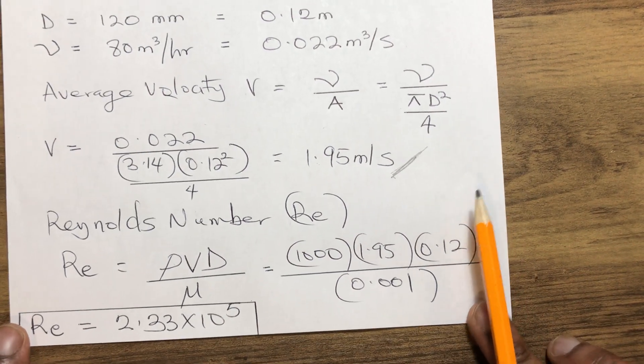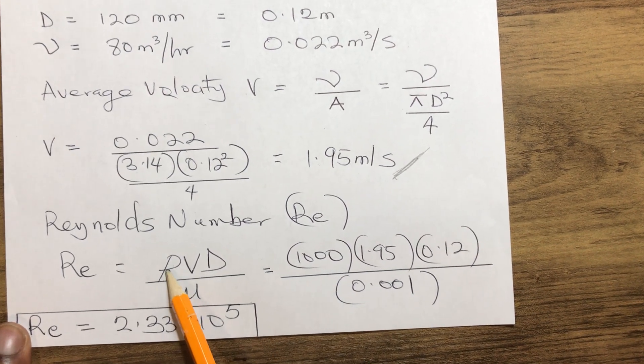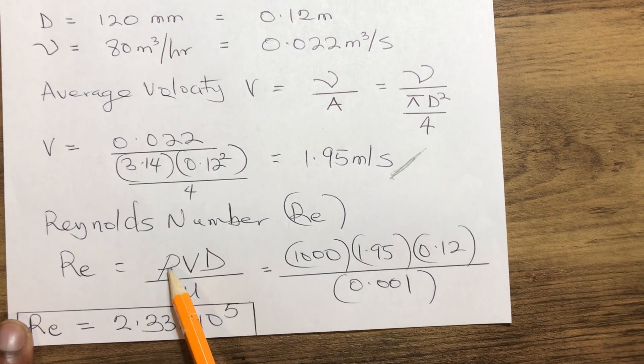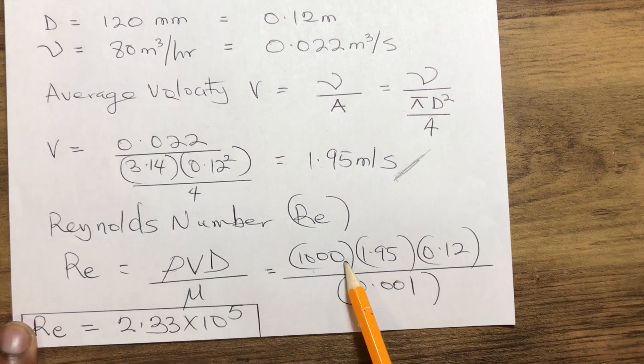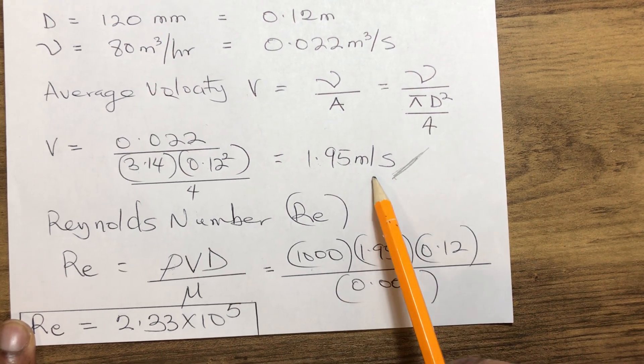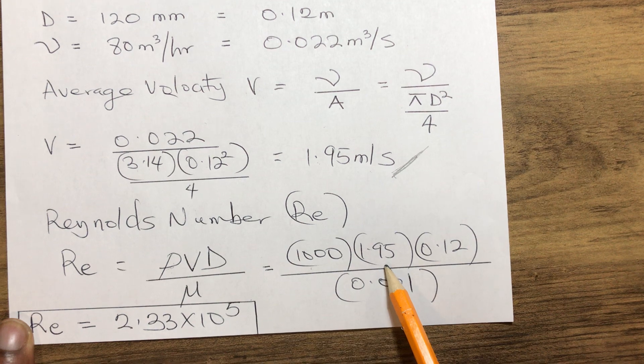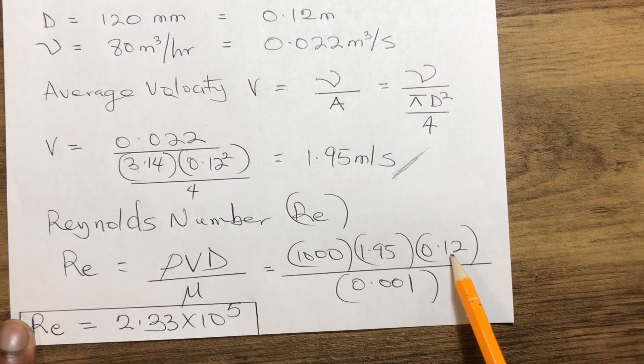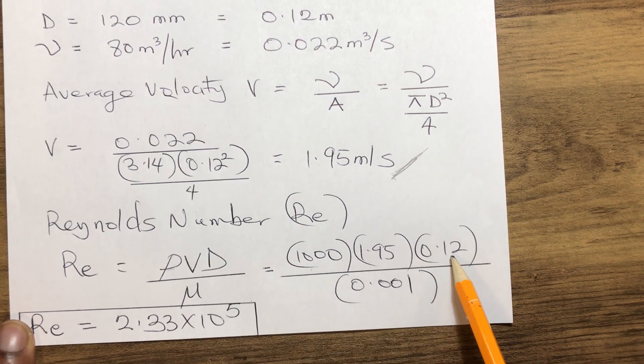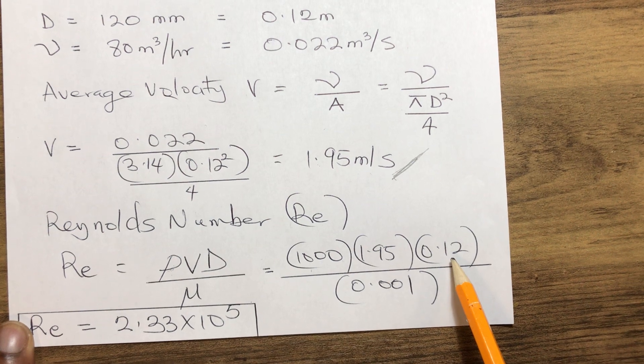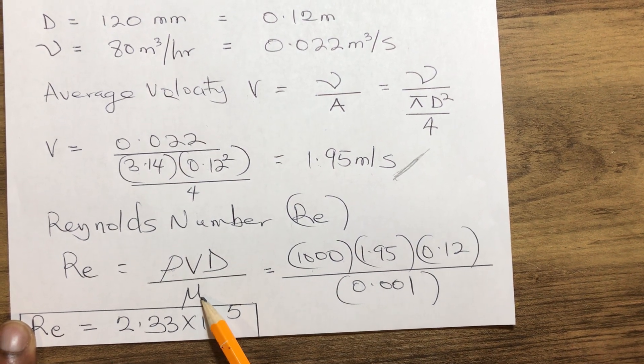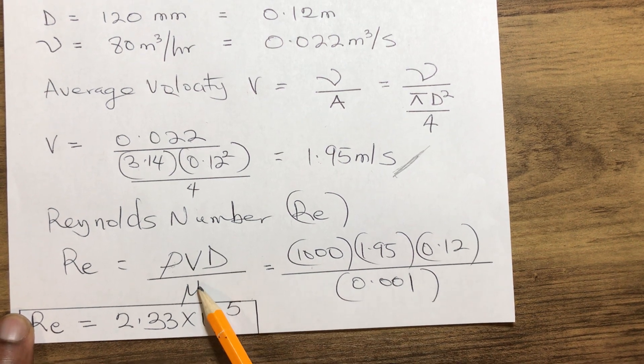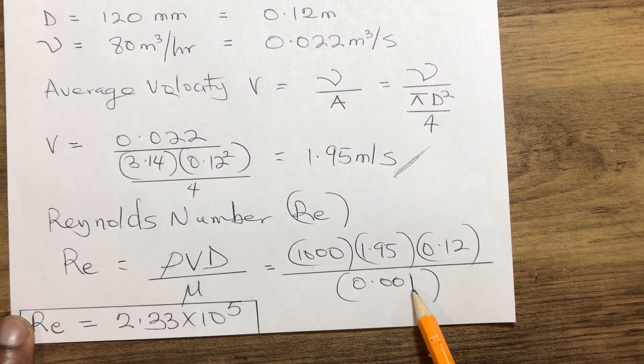Calculating the Reynolds number: we have density ρ = 1000 kg/m³ multiplied by our calculated velocity V = 1.95 m/s, multiplied by the diameter D = 0.12 m, over the viscosity μ = 0.001.